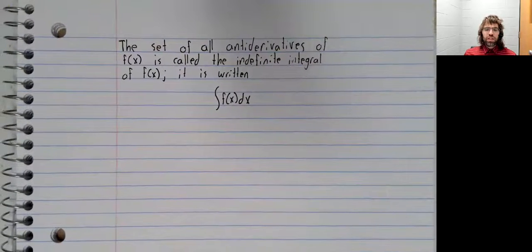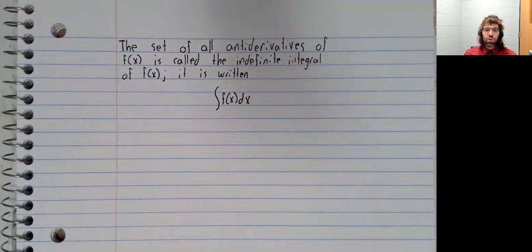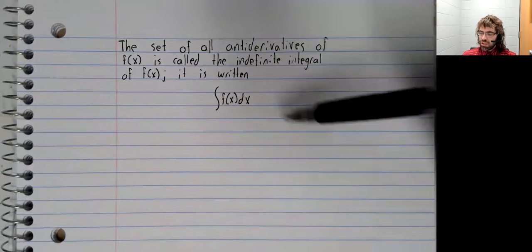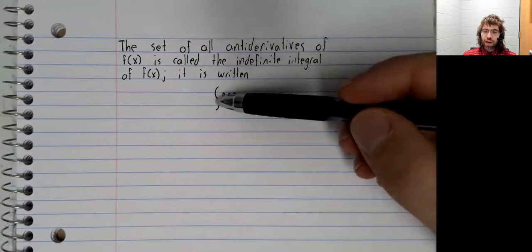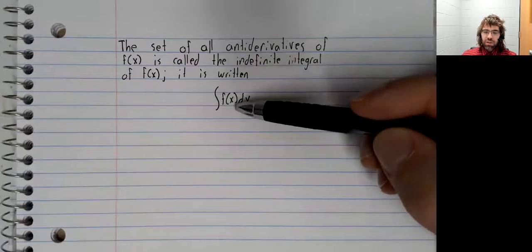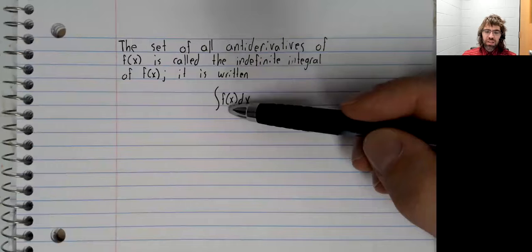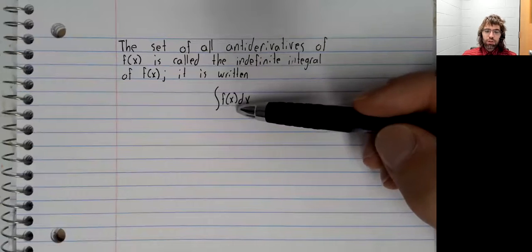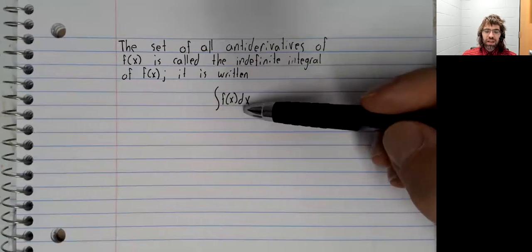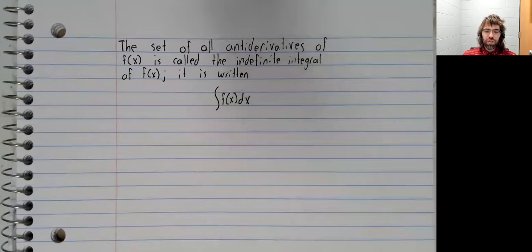A function has multiple antiderivatives. The set of all its antiderivatives is called the indefinite integral of the function, and it's written using this notation, this kind of stretched out s, and then whatever your variable is, in this case f of x, we write d that variable next to the function.